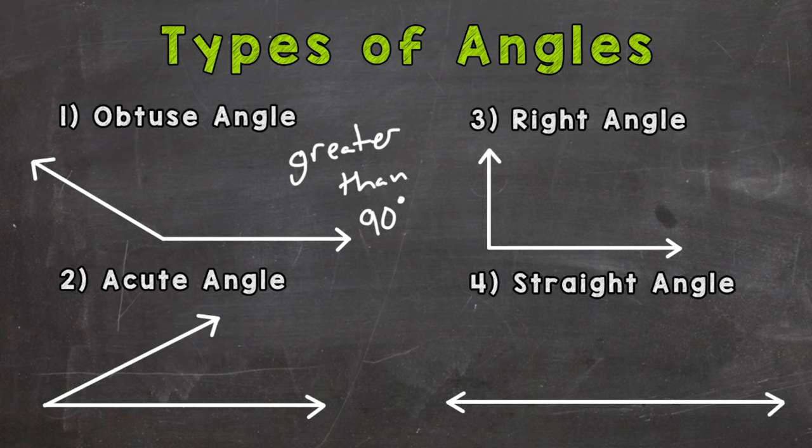For example, here our angle shares this common point right here, and the rays go off to the left and right, creating an angle. Let's say this one is 115 degrees. Is that greater than 90 but less than 180? Yes, so we have an obtuse angle.